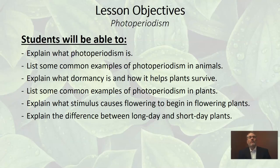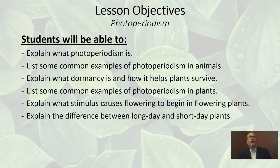Let's take a look at our learning objectives for photoperiodism. First, I need you to be able to explain what photoperiodism is. I need you to list some common examples of photoperiodism in animals, explain what dormancy is and how it helps plants survive, list some common examples of photoperiodism in plants, explain what stimulus causes flowering to begin in flowering plants, and explain the difference between long and short day plants.